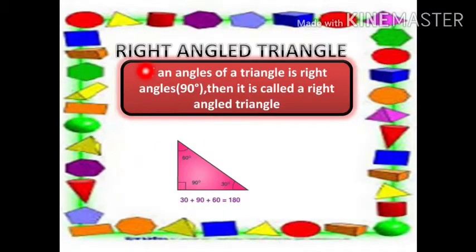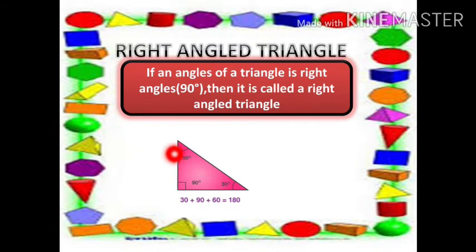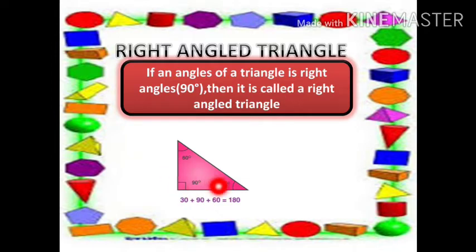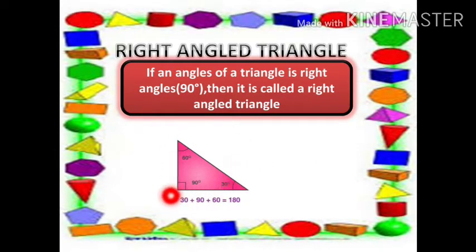A Right Angled Triangle: if one angle of a triangle is a right angle, that is 90°, then it is called a Right Angled Triangle. For example, here one of the angles is 90°, another is 60°, and the third is 30°. Since one angle is 90°, it is called a Right Angled Triangle.